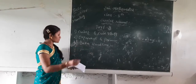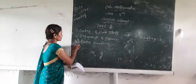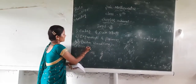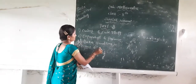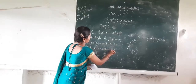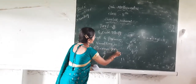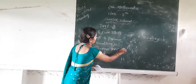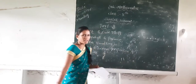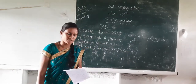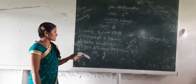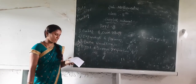The fourth chapter is Direct and Inverse Proportion. Here, an introduction with graphs is given, and calculations using direct and inverse proportion methods are also included.